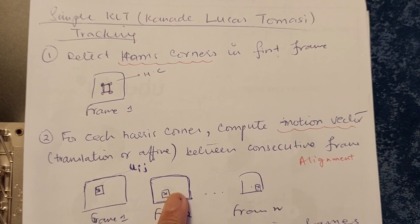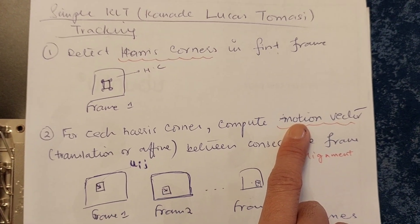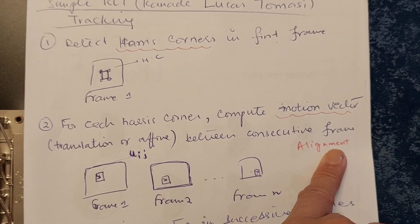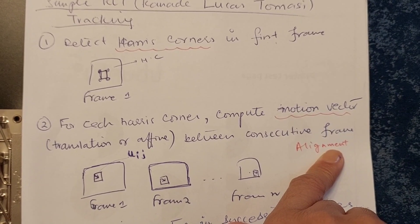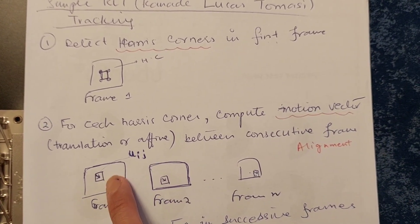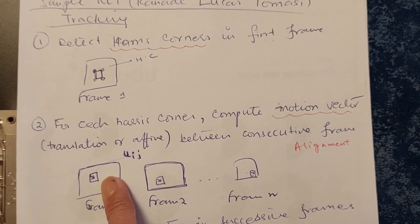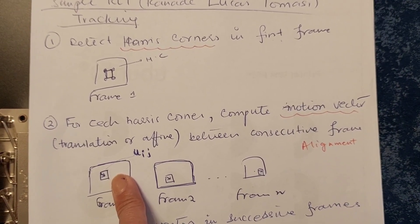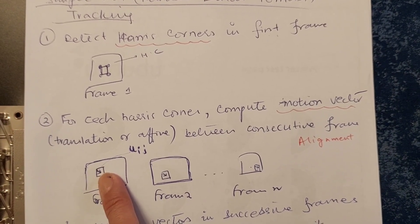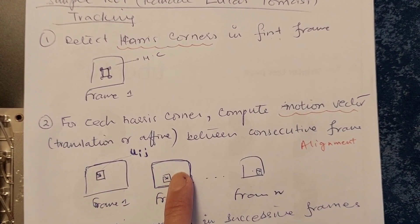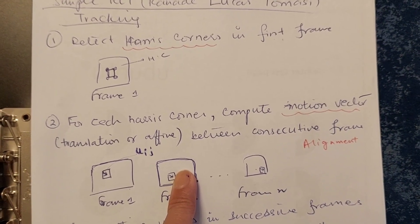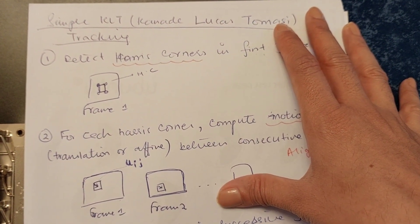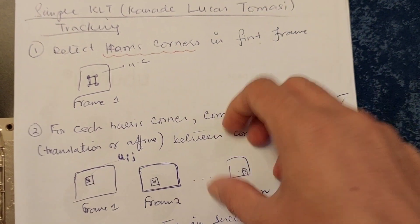This step is known as the alignment step, because we are trying to align the same Harris corner with the help of motion vectors. For example, we are trying to find where the same car is in the second frame. This alignment point is very important in the complete Lucas-Kanade-Tomasi tracking algorithm.